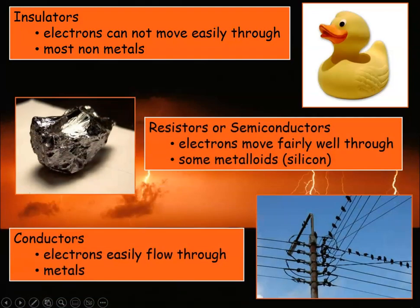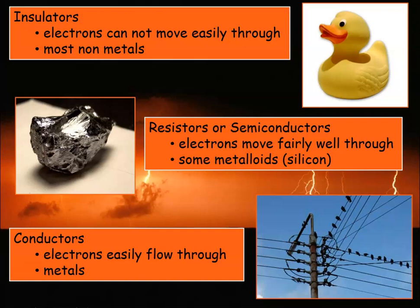Conductors are materials that electrons easily flow through, and these are your metals. Gold and silver are very conductive, but we typically don't use those because they're expensive. The most common conductor is copper. Aluminum can also be used — you might have aluminum wiring in your house — though it has some safety issues. If you do have aluminum wiring, something called pigtailing may have been done, where copper wires are added at the plugs, since copper is a slightly better conductor even though aluminum is cheaper.